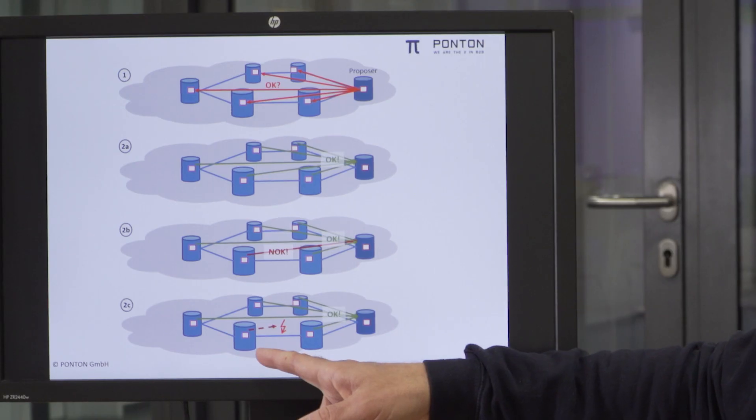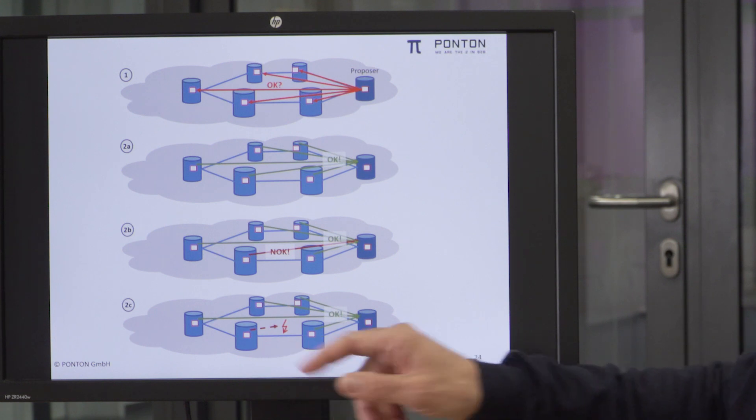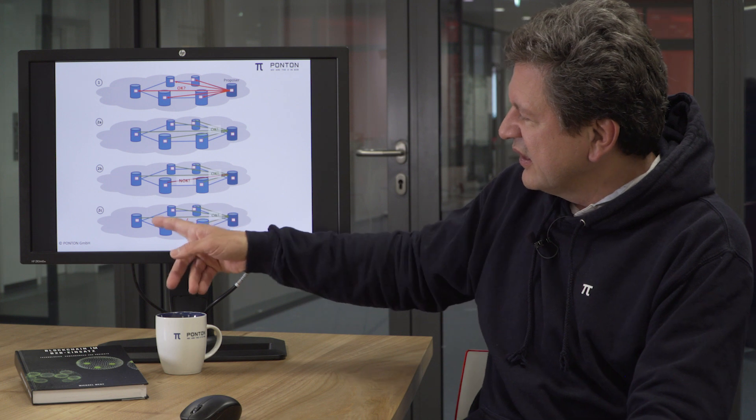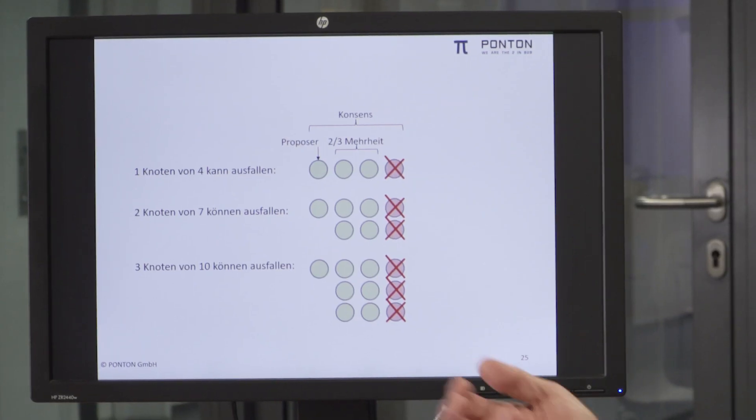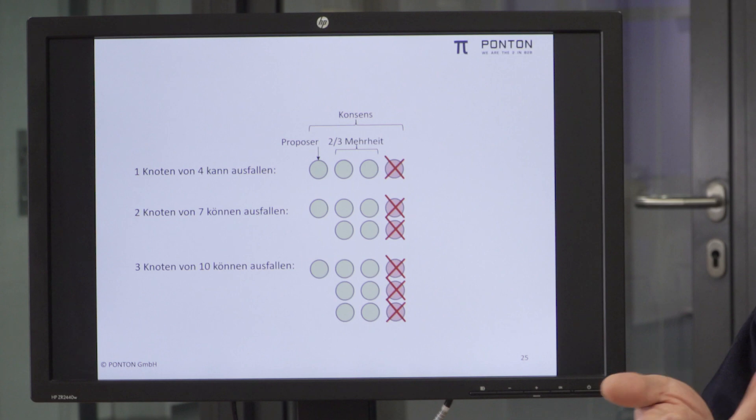In another scenario, one node is down and simply doesn't respond. But there is still an answer from the remaining four participants, and therefore the fault tolerance of the consensus mechanism applies — the new block is still considered valid. These are typical scenarios addressed by the consensus mechanism. This also repeats the magic numbers commonly found in PBFT-based consensus mechanisms.